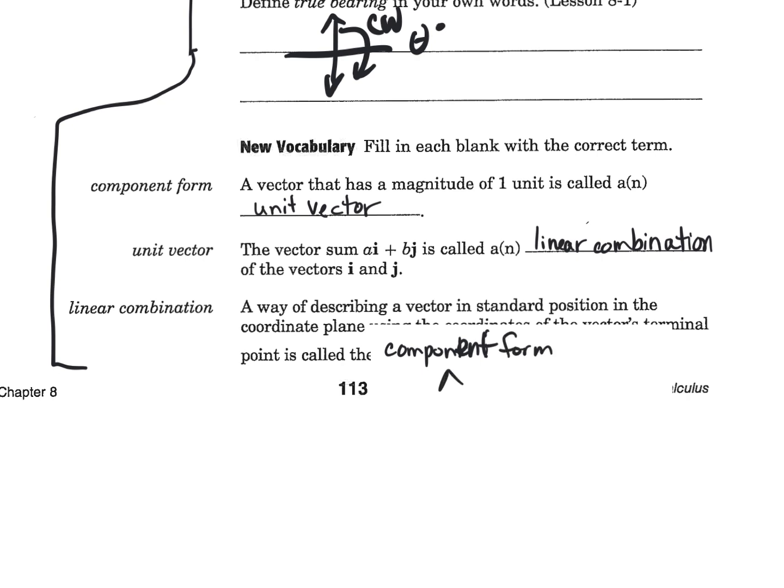Component form. In other words, guys, for component form, the initial point is always going to be at (0,0), right? Then it's going to go to some terminal point, and this terminal point is (a,b), and we use that to write it. We've been doing this already as <a,b>. The pointed brackets mean it is a vector. It means it is a vector that starts at (0,0) and ends at the point (a,b). Get it?